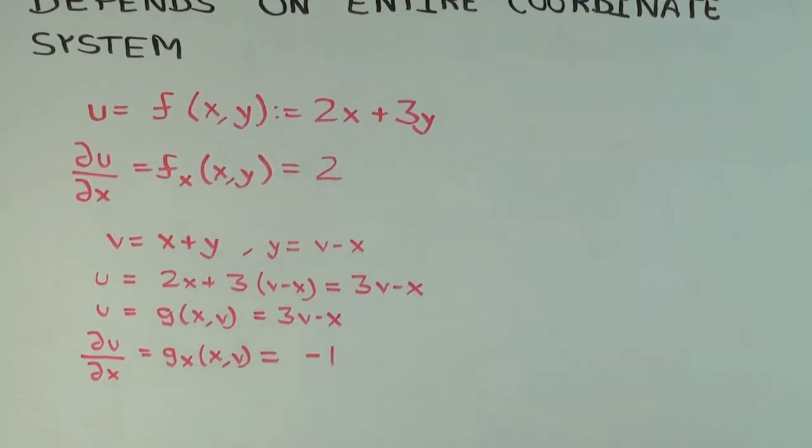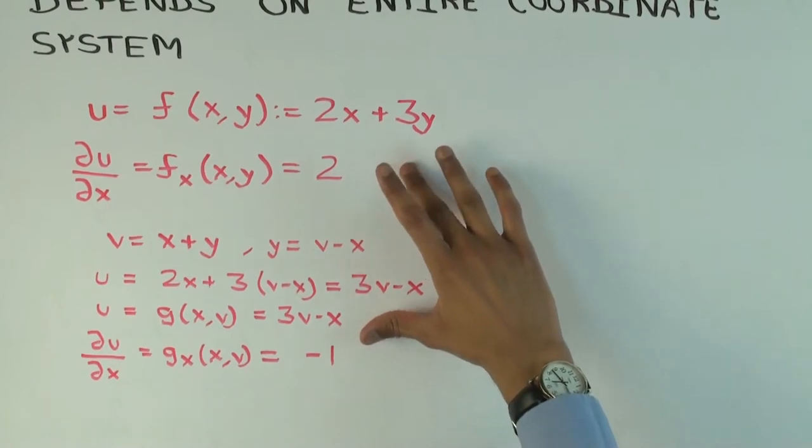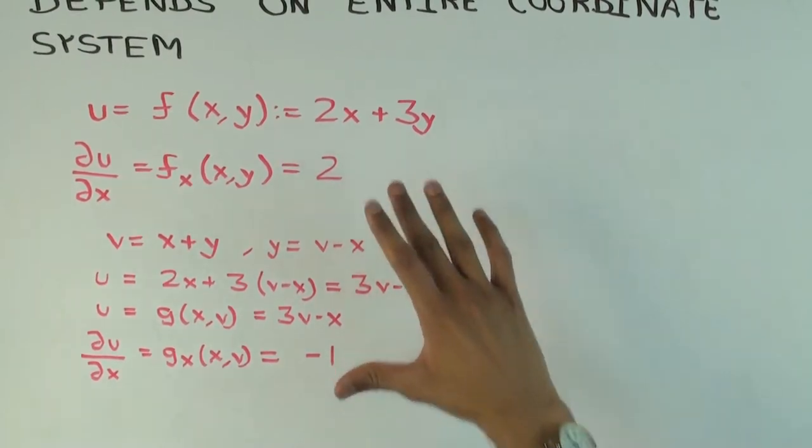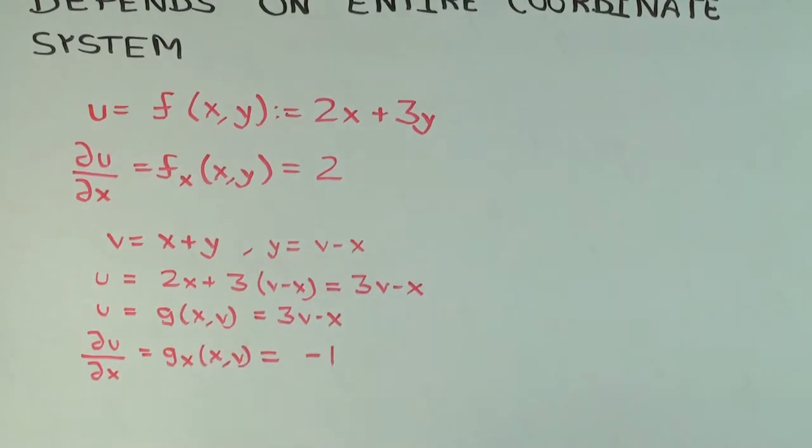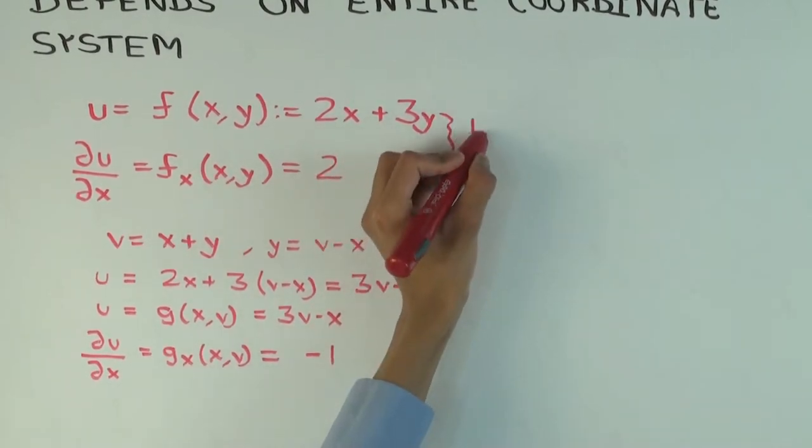So why did you get different answers here and here? Is it loud and clear? Why did you get different answers here and here? I think, you know, in the first case, we are holding y constant. Okay. In the other case, we are holding v constant. And what's v? Sum of x and y.